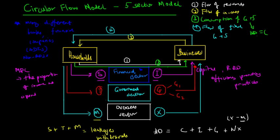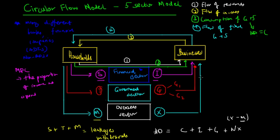On the other hand, we have injections back into the economy in the form of I plus G plus X — investment, government spending, and exports — which represent injections back into the circular flow.